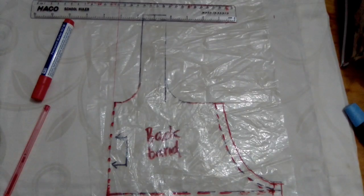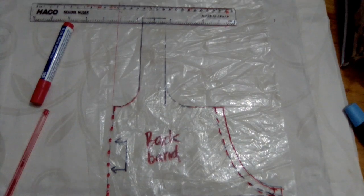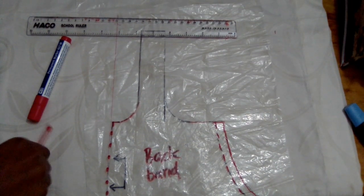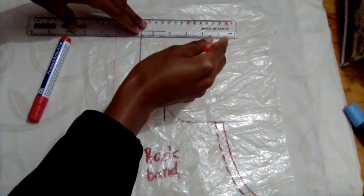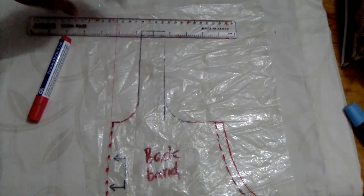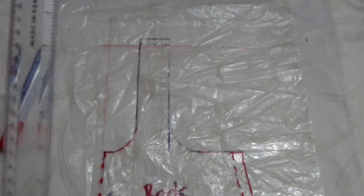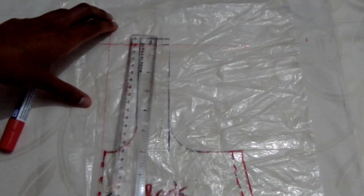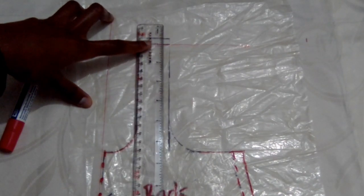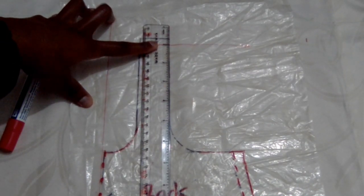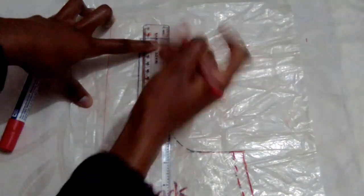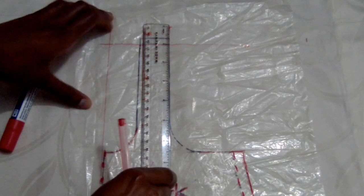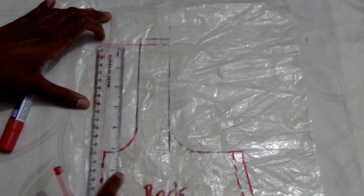Then another line at the shoulder strap. I zoomed in so you could see better and I'm using a ballpoint pen because this is a guideline. Now that I've drawn that line at the shoulder point, I can get my marker pen. I'm going up one inch from my shoulder strap and marking a dot.